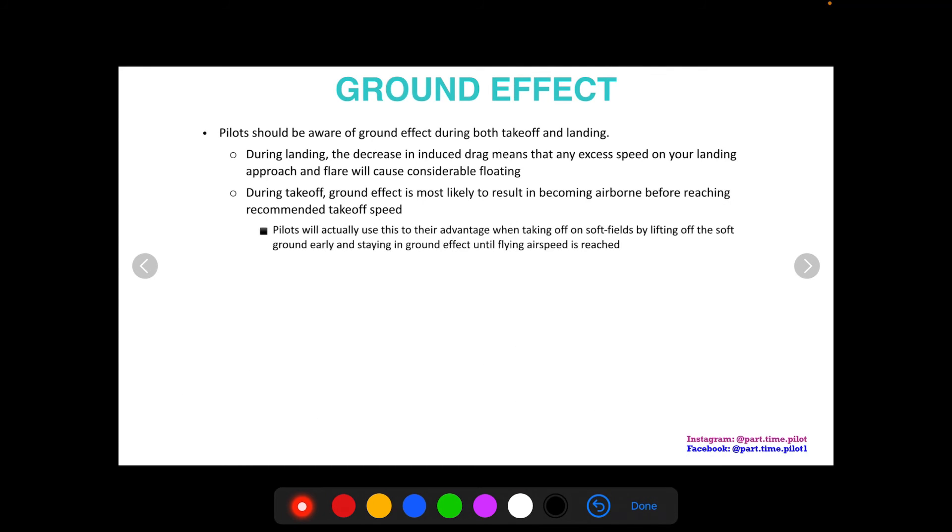During takeoff, ground effect is most likely to result in becoming airborne before reaching your recommended takeoff speed. So pilots actually use this to advantage, for example, when taking off on soft fields, like a muddy or dirt field, maybe wet grass or something like that, by lifting off the soft ground early and staying in ground effect until flying airspeed is reached.